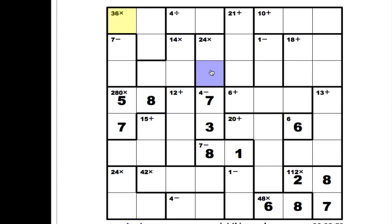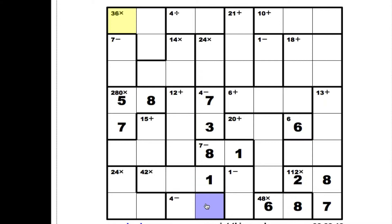4 and 6. We are left with 1, 2, and 5 to go in these various boxes. 2 and 5 can't go here because there's already a 2 in that row, and a 5 will not divide into 42 evenly. So, that must be 1. That means this must be 5. That's 1, that's 2, that's 8.